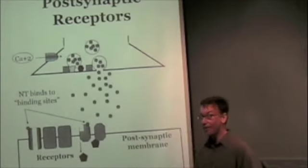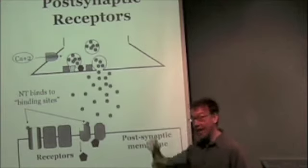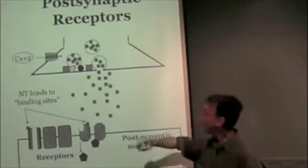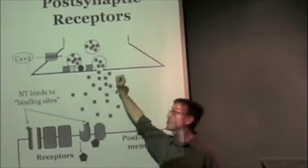So we have illustrated up here on this overhead the pre-synaptic membrane. Remember, you can tell at a synapse which is the pre-synaptic membrane by the presence of the synaptic vesicles, which are packed with molecules of neurotransmitter.